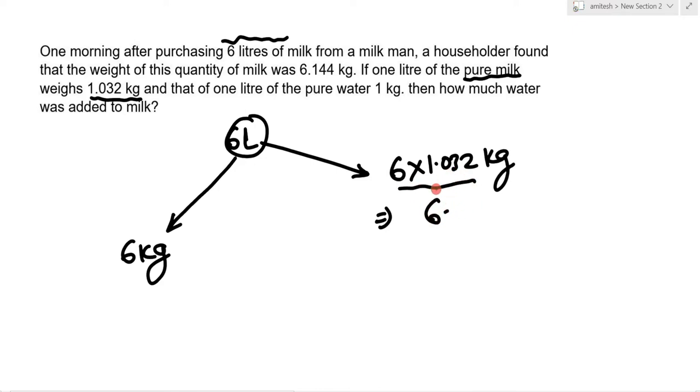6 times 30 is 180, and 6 times 2 is 12, so 192. This gives us 6.192 kg. Now since this is a mixture of two substances, we can use alligation. This is pure water and this is pure milk.